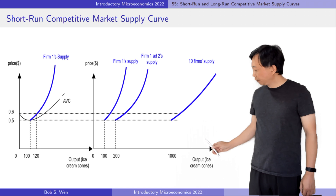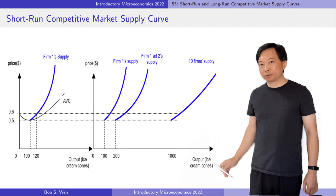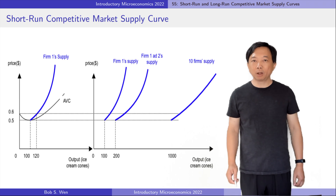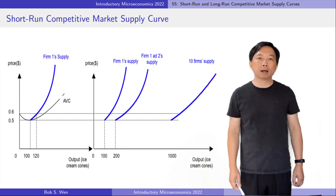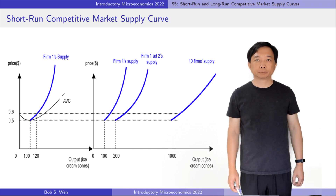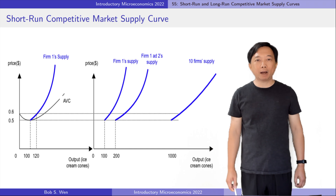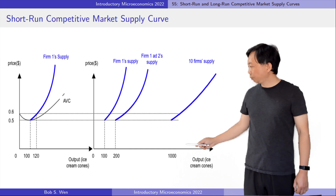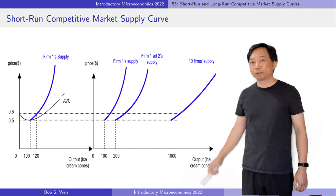The right graph illustrates the competitive market supply curve. If the market price is lower than $0.50 per ice cream cone, no firm supplies any ice cream, so the market supply is zero. At the market price of $0.50, each firm is willing to supply 100 ice cream cones, as shown in the left graph.